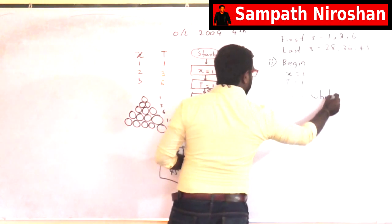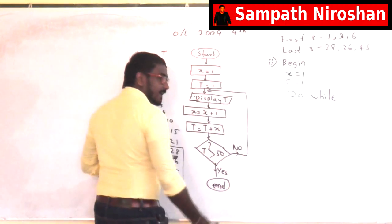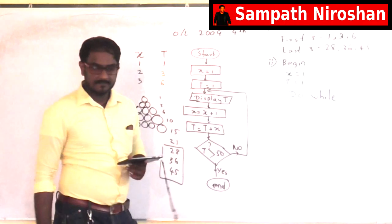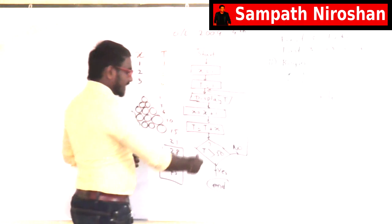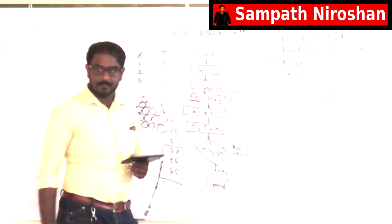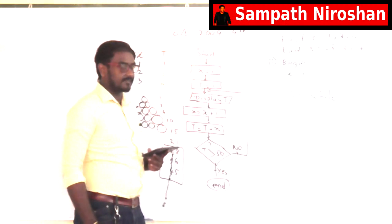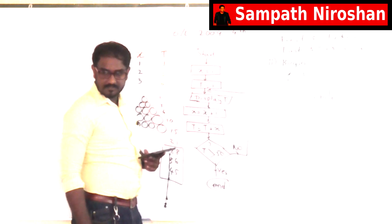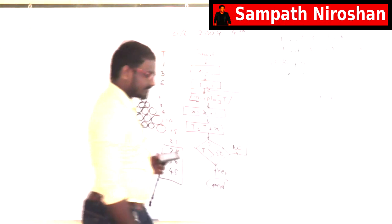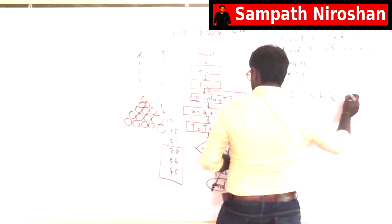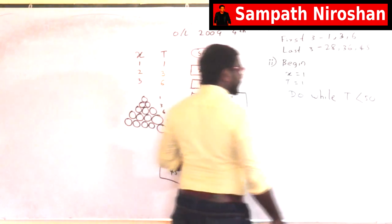While what? T greater than 50 or less than 50? Greater than 50 or less than 50? Greater than 50. Now right here, greater than 50 works, no problem, because this checks at the end. But there I am going to check at the beginning. Understood. So should I say greater than or less than? Less than. So I am saying t less than 50.